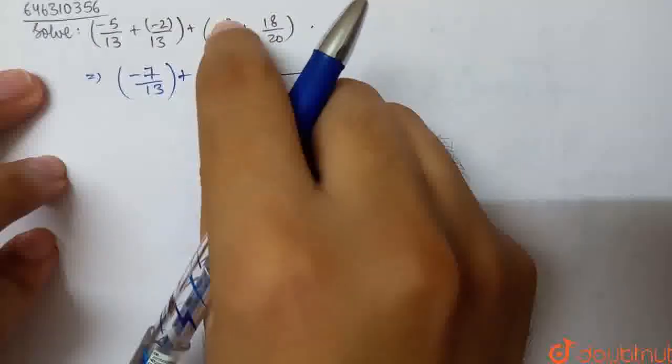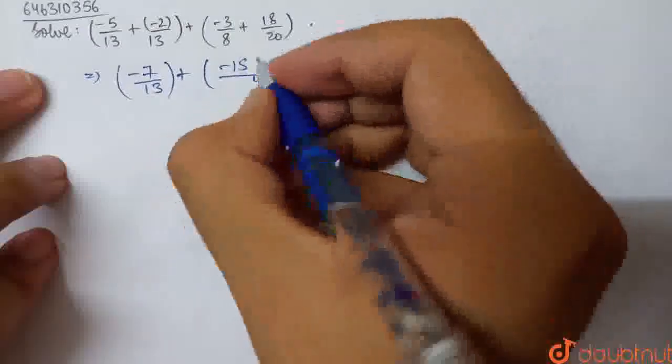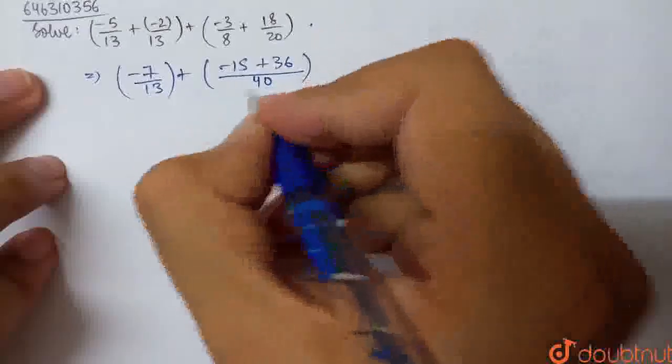We have to multiply 8 by 5. So multiply by 5, divide by 5, that is minus 15 by 40. And we multiply and divide by 2 to get 36 by 40.